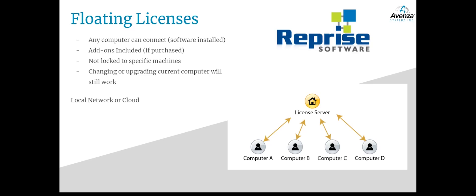This graphic will help better explain what a floating license server is. All the computers — A, B, C, and D — can have the Map Publisher or Geographic Imager software installed. However, the floating license server will limit access to the number of computers that can be licensed at any given time. For example, if your organization only needs two licenses at the same time, then computers A and B can access simultaneously but C and D will not be able to. We can consider the licenses as seats — since A and B are each using a seat, C and D will need to wait until one of those seats becomes available.